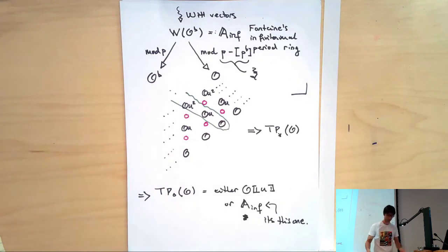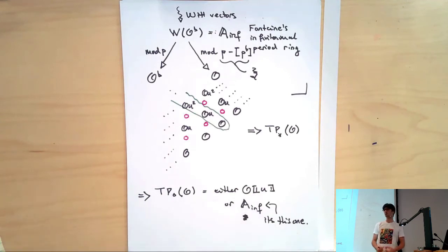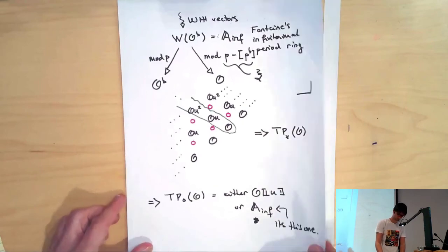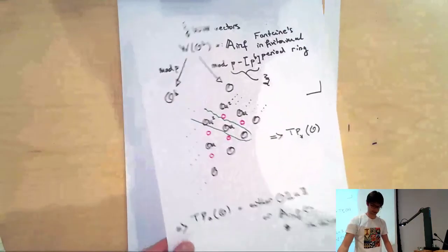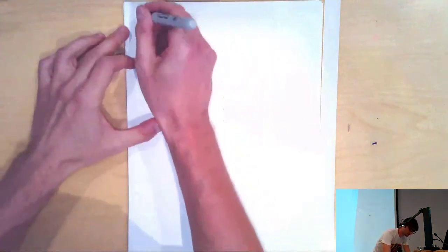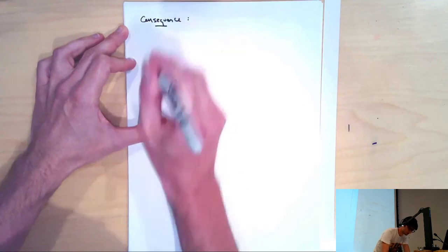By some universal property of A_inf, you can construct a map from A_inf to TP0(O). And then if you want to check that it's an isomorphism, you can go mod p and check some behavior as to how TP of FP behaves. And that's how you prove that in fact what TP does is: it takes in this perfectoid ring O and outputs its A_inf ring coming from p-adic Hodge theory.